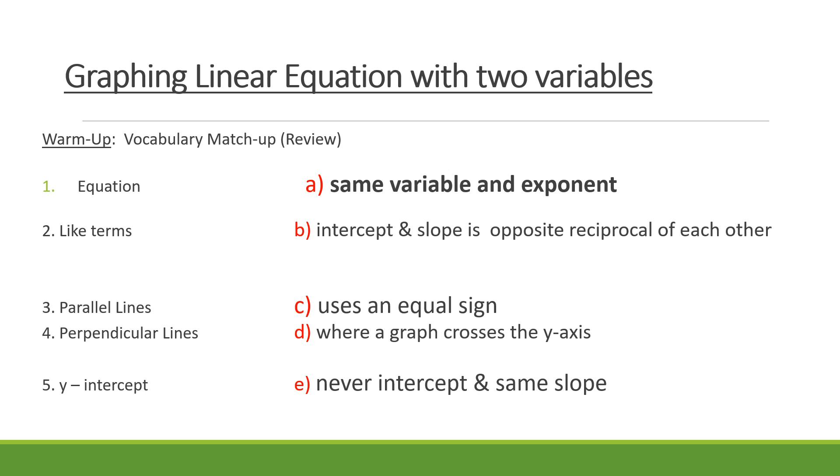Parallel lines are those that never intersect and have the same slope. Perpendicular lines intersect, and the y-intercept is where a graph crosses the y-axis. Perpendicular lines intercept and their slopes are opposite reciprocals of each other.